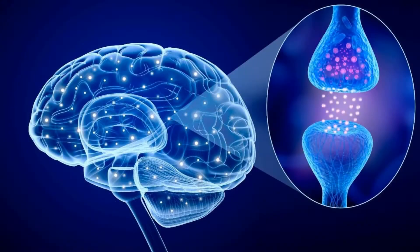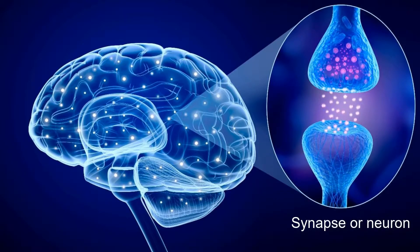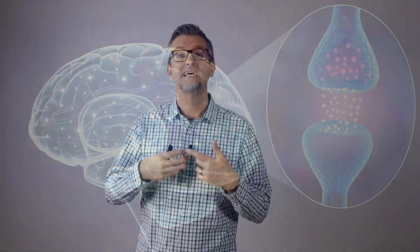What do I mean by that? Well, here's a look inside an actual brain. Within your brain you have lots of different brain cells, and these brain cells will connect and form what you see here, which is a synapse or neuron. So basically, the information that we know and have expertise in is physically connected between two brain cells.